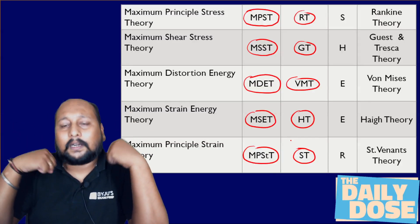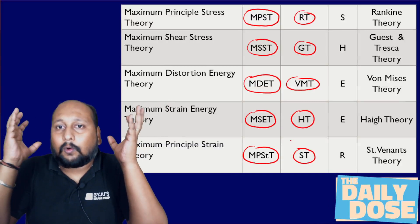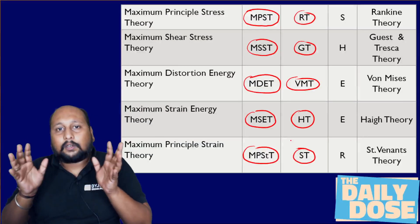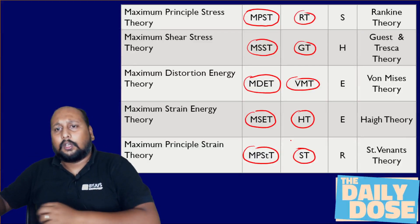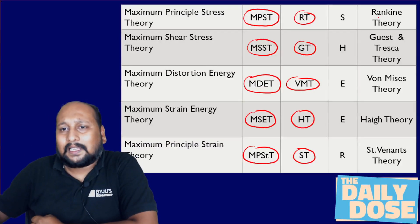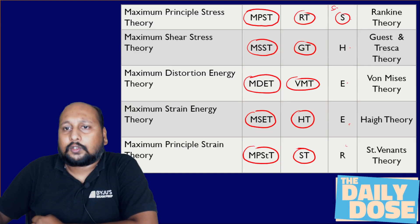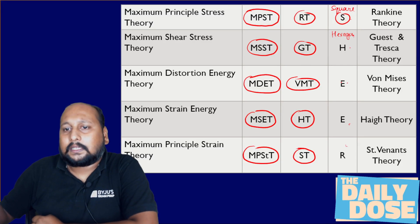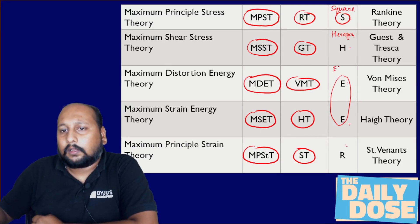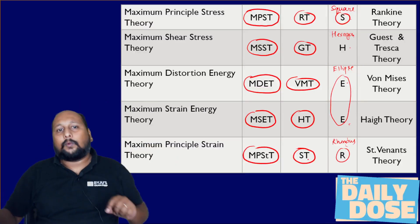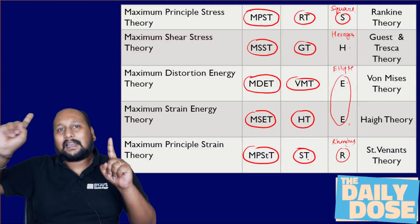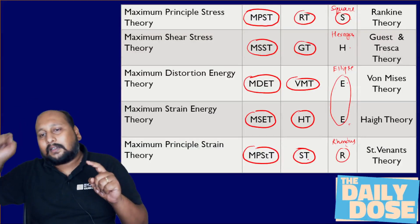We need to remember the shape of the failure region because many times you are getting that straightforward question. The column to remember is the word SHEER — S-H-E-E-R. Where S stands for square, H stands for hexagon, the first E stands for ellipse, the second E also stands for ellipse, and R stands for rhombus. So MPST Rankine theory is square, MSST Tresca theory is hexagon.